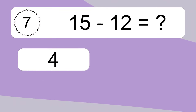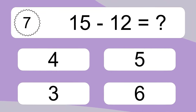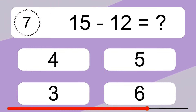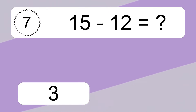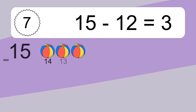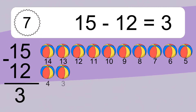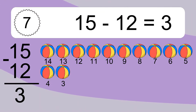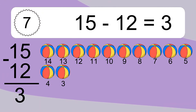15 minus 12 equals what? 15 minus 12 equals 3. Let's count it: 14, 13, 12, 11, 10, 9, 8, 7, 6, 5, 4, 3.